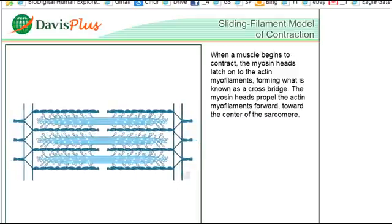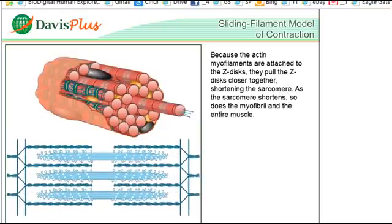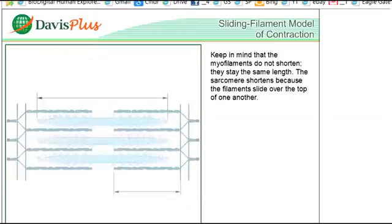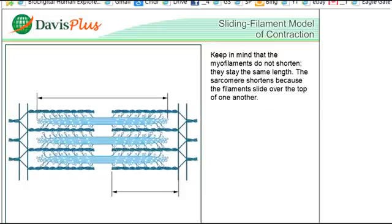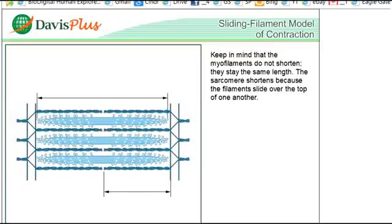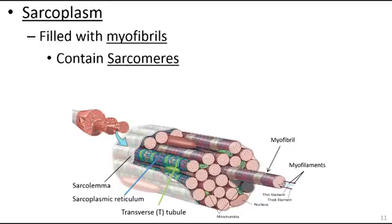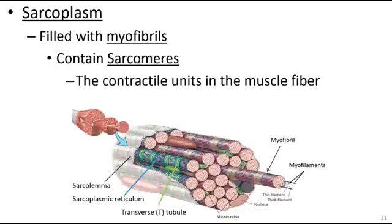There are two types of myofilaments. The myofilaments toward the center of the sarcomeres are the actin myofilaments, which are attached to the z-discs and pull the z-discs closer together, shortening the sarcomere. As the sarcomere shortens, so do the myofibrils and the entire muscle. Those z-disc to z-disc units — the contractile units — are what actually contract.